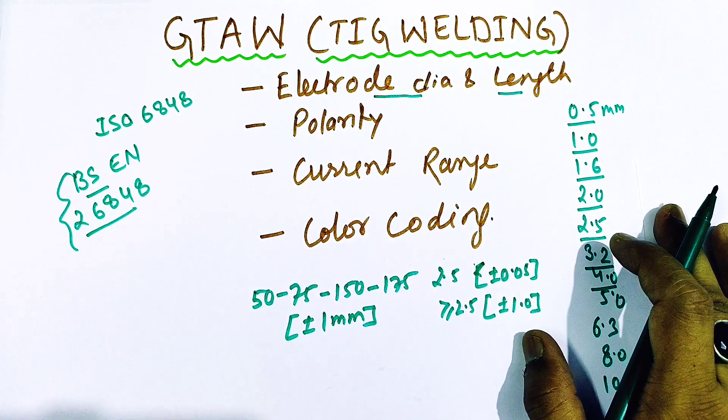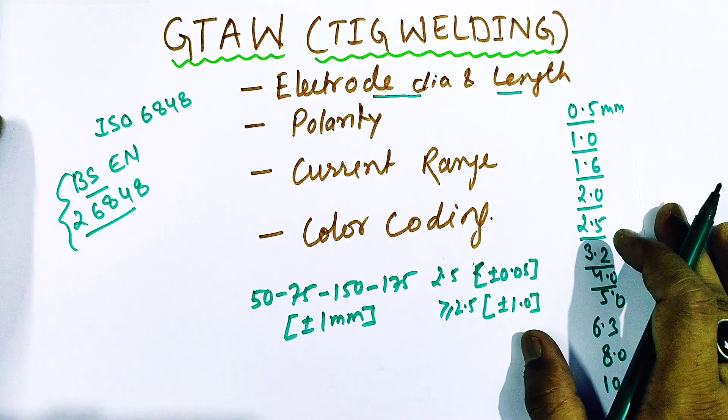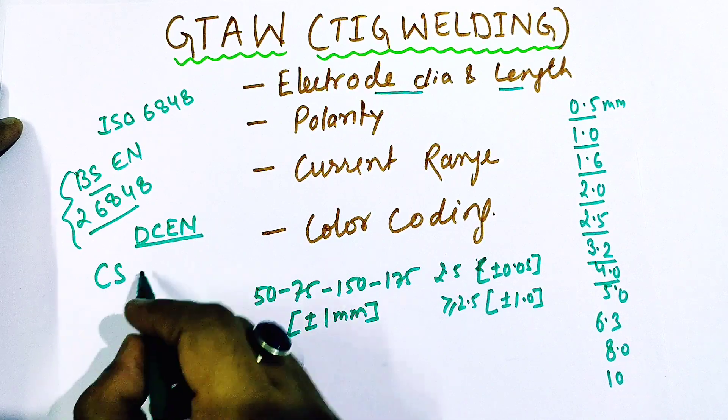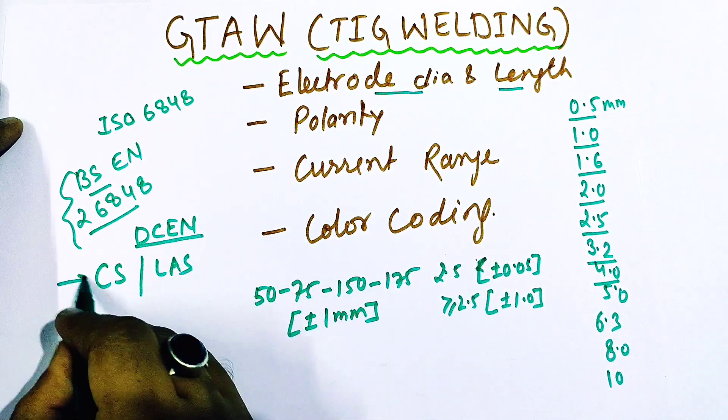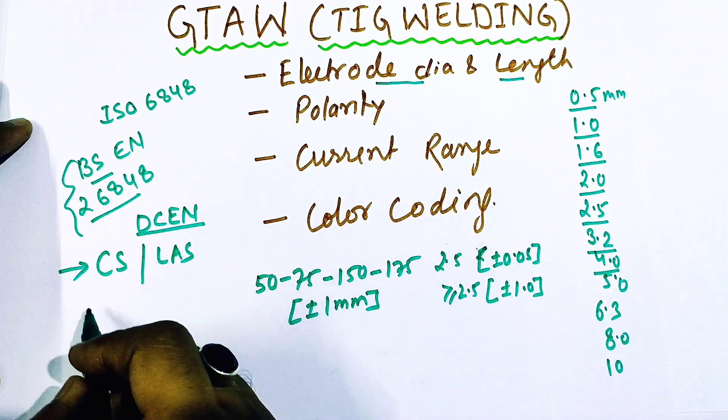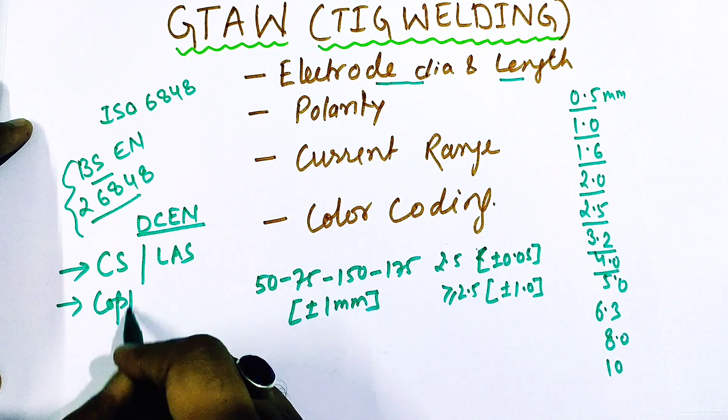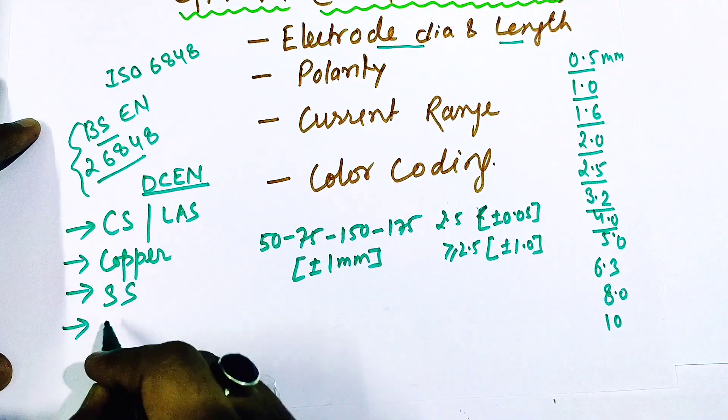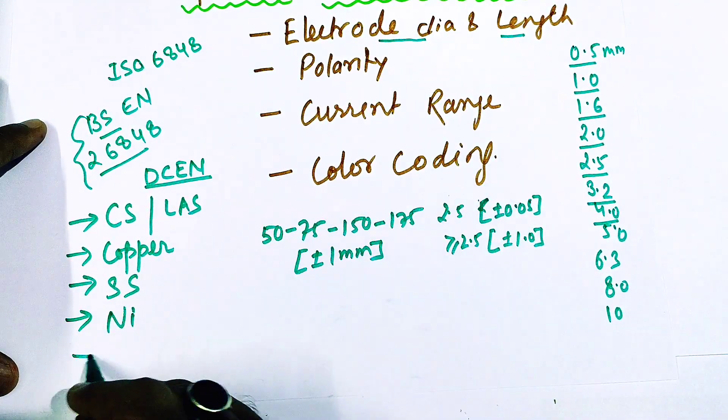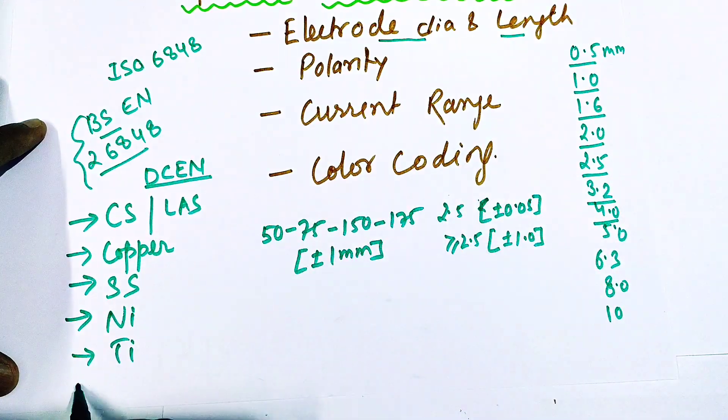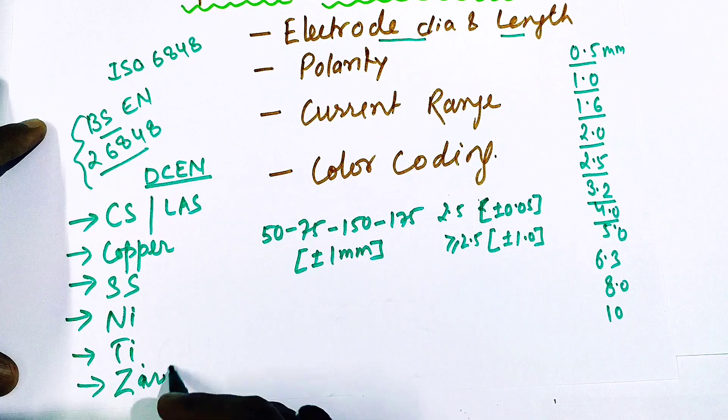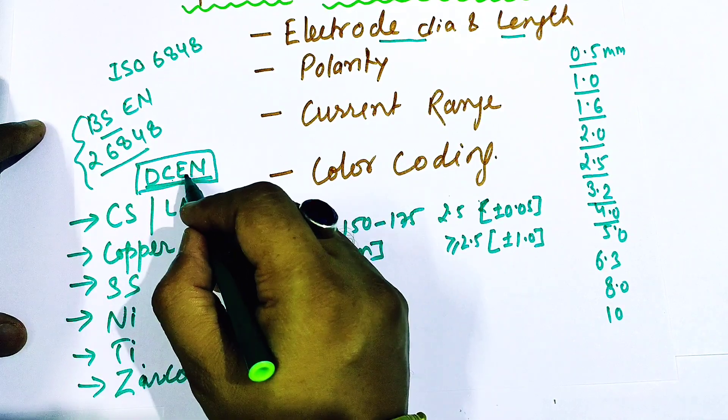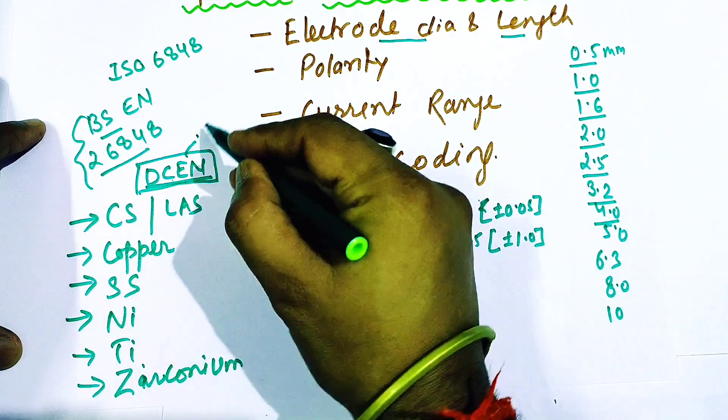Friends, most of the materials are used in DCEN, that is direct current electrode negative polarity. For example, carbon steel, low alloy steel, these are used in direct current electrode negative configuration, then copper and its alloys, then stainless steel, then nickel and its alloys, titanium and its alloys, and finally zirconium. So these materials are welded in DCEN configuration, that is direct current electrode negative. It is also called straight polarity.